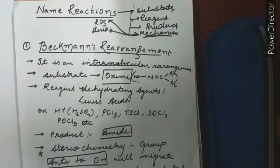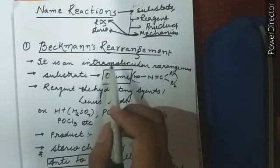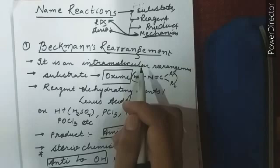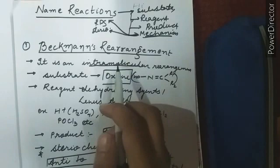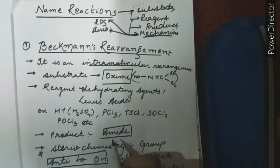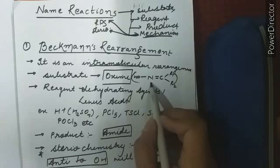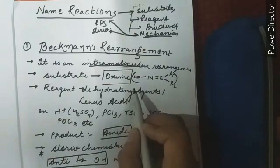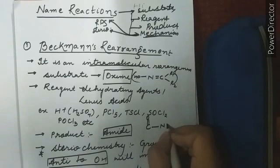Today we will start with Beckmann rearrangement. As the name suggests it's a type of rearrangement and very importantly it's a type of intramolecular rearrangement in which the groups migrate within the molecule or everything will happen within the molecule. Now the substrate is oxime. The product is an amide. For those who don't know what is an oxime, an oxime is a compound in which a nitrogen is attached to a doubly bonded carbon on one side and to an OH on the other side. And product is an amide - C double bond O, N, R, you can add an H.